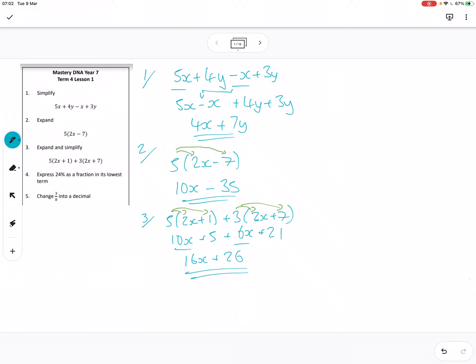Question 4: express 24% as a fraction in its lowest terms. So any percentage, just write the number over 100, and then simplify the fraction. So I do this in stages a little bit, so I go 12 over 50. Well they both divide by 2, don't they? 6 over 25, I think that's probably as far as that goes.